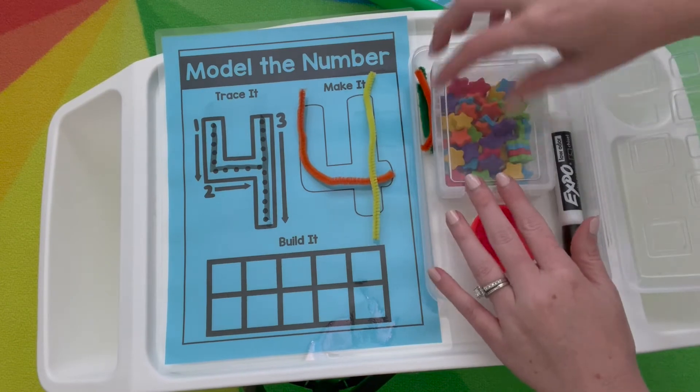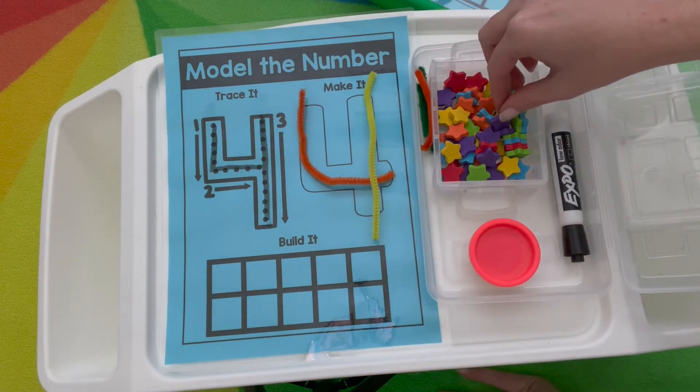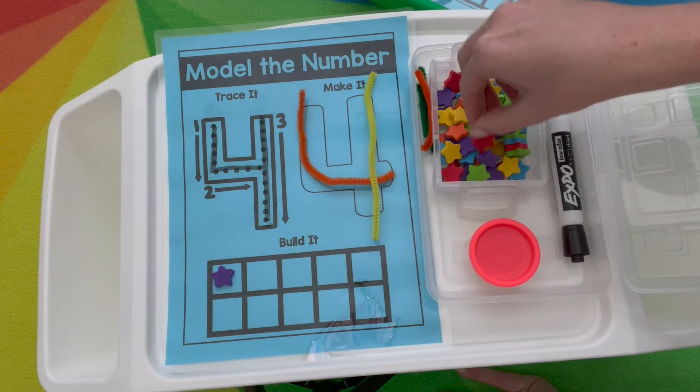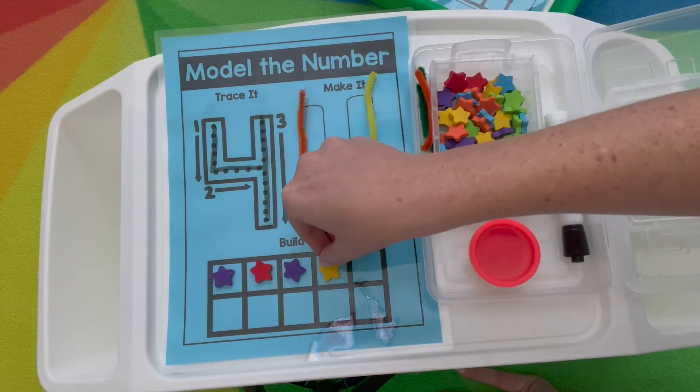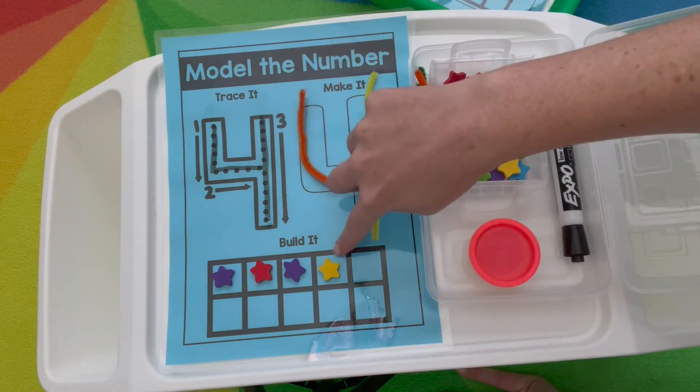And then these are the mini erasers, but you can use any counters to build it. One, two, three, four. So they're modeling it by tracing it, make it, build it.